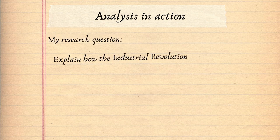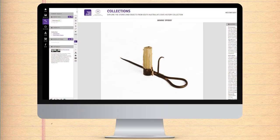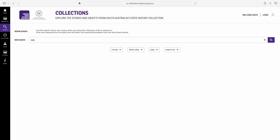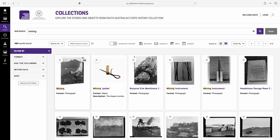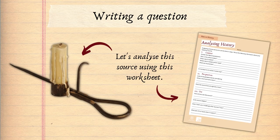Now that we've learned about the three stages of analysis, it's time to see it in action. My research question is: explain how the industrial revolution in Britain affected migration to and the culture of South Australia in the mid-1800s. So I'll be looking for sources to help me with this. This is my first source — it's a primary source that I found on South Australia's state history collection online. Let's analyse this source using this worksheet.